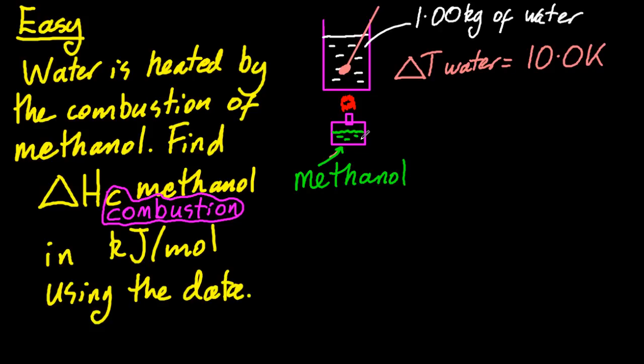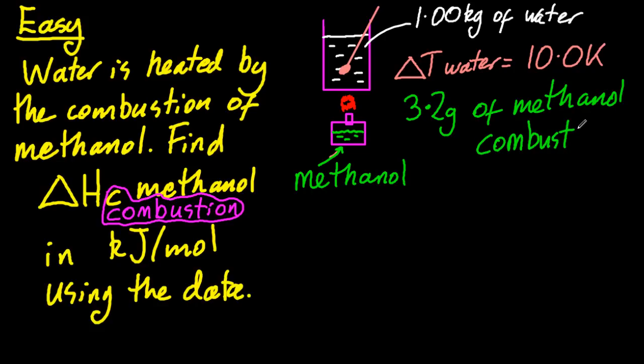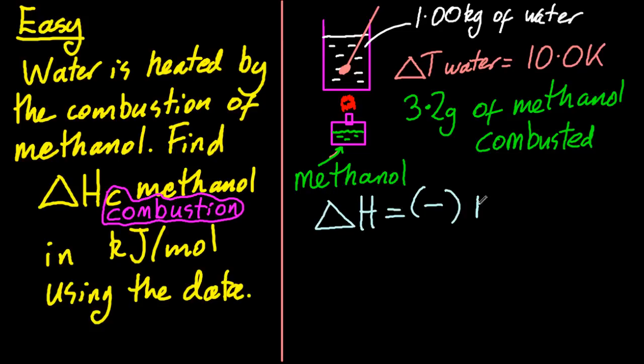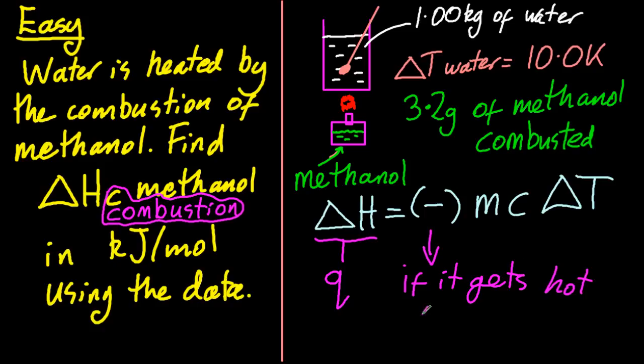And to make it even easier, I've burned 3.2 grams of methanol. Now the sig figs, as usual, are not going to be fantastic. But you're here for the concepts, not the sig figs. All right. Now the IB gives a slightly different equation to this one. They say that delta H is q, and it's essentially the same thing as far as the IB are concerned. And the IB also doesn't put this minus in. But they always ask about combustion, so then you forget to put it in later. So I'm going to stick with delta H equals minus m c delta T. That's what we call it here.